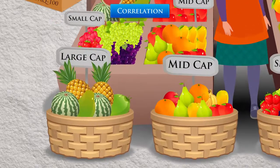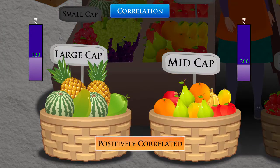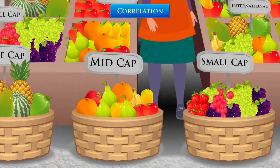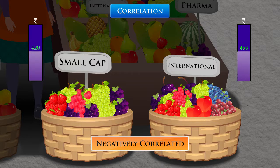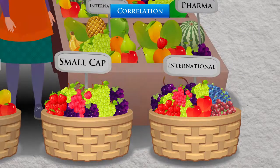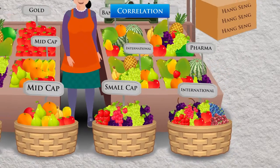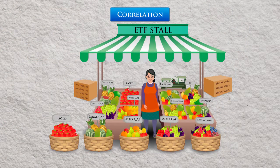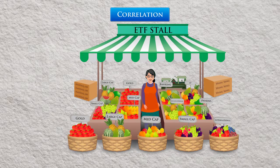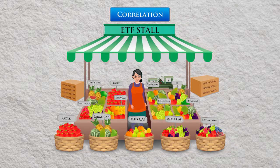When the returns of one ETF go up or down matching another, then both ETFs are said to be perfectly positively correlated. When one of them goes up while the other comes down, they are perfectly negatively correlated. With ETFs, you can diversify into non-traditional asset classes, such as gold and emerging markets, which are weakly correlated to one another. This is crucial as they lower volatility and help build a diversified investment portfolio.